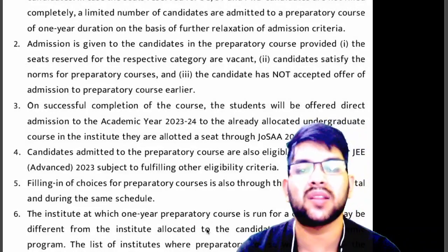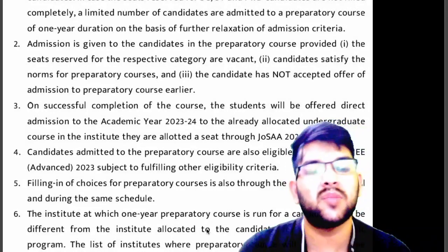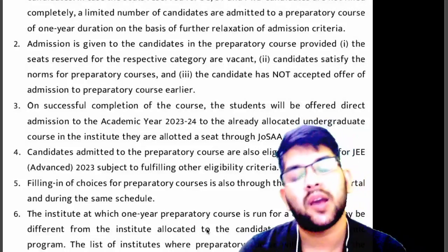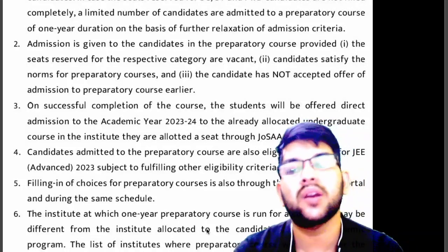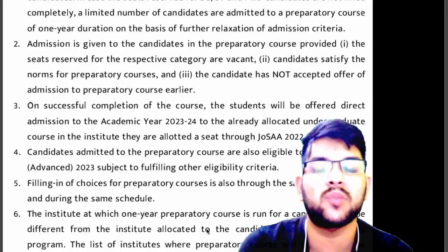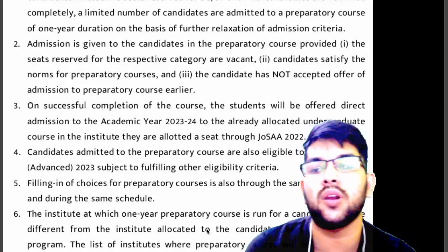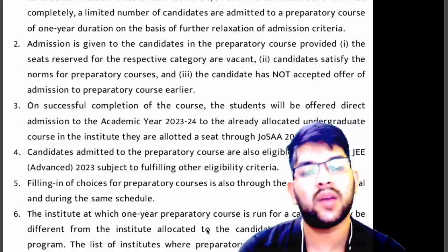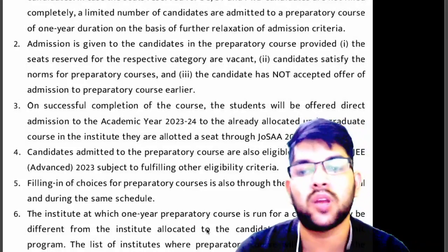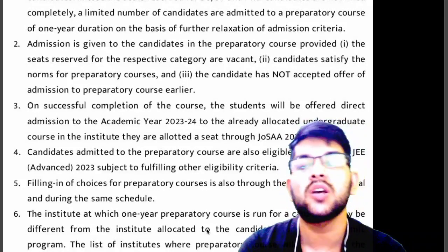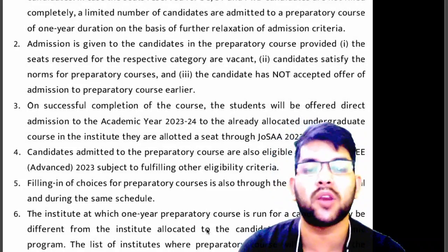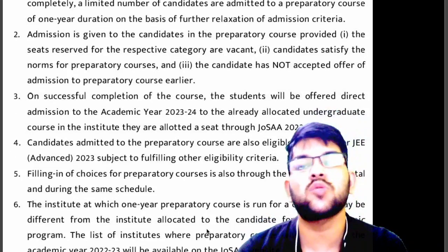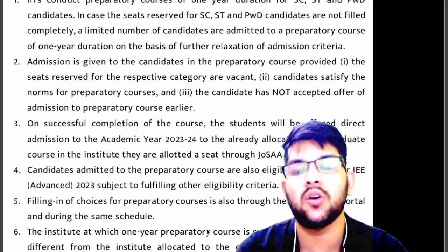For choice filling for preparatory courses, there is nothing separate — you fill choices the same way as for NIT and Triple-IT, and IIT college options will appear if you are eligible for a preparatory course. It can be confusing to decide whether to go with an NIT branch like CSE or ECE or with the preparatory course at an IIT. I will guide you based on your family situation and career expectations to help you make the best decision.